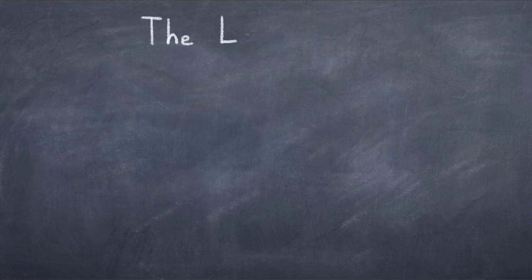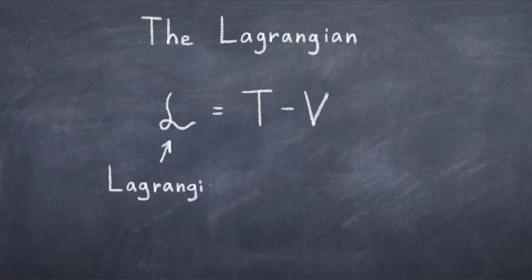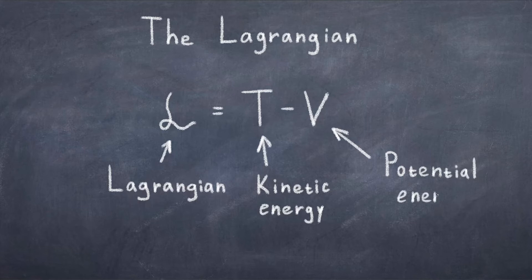What is a Lagrangian? It is the central object of the formalism, and one can write the Lagrangian as L equals T minus V, where L refers to the Lagrangian, T is the kinetic energy of the system, and V is the potential energy of the system. Thus, to work in this formalism all you have to do is figure out what the kinetic energy and the potential energy of the system are. On its own, the Lagrangian isn't very useful as it doesn't tell us the motion of the system.